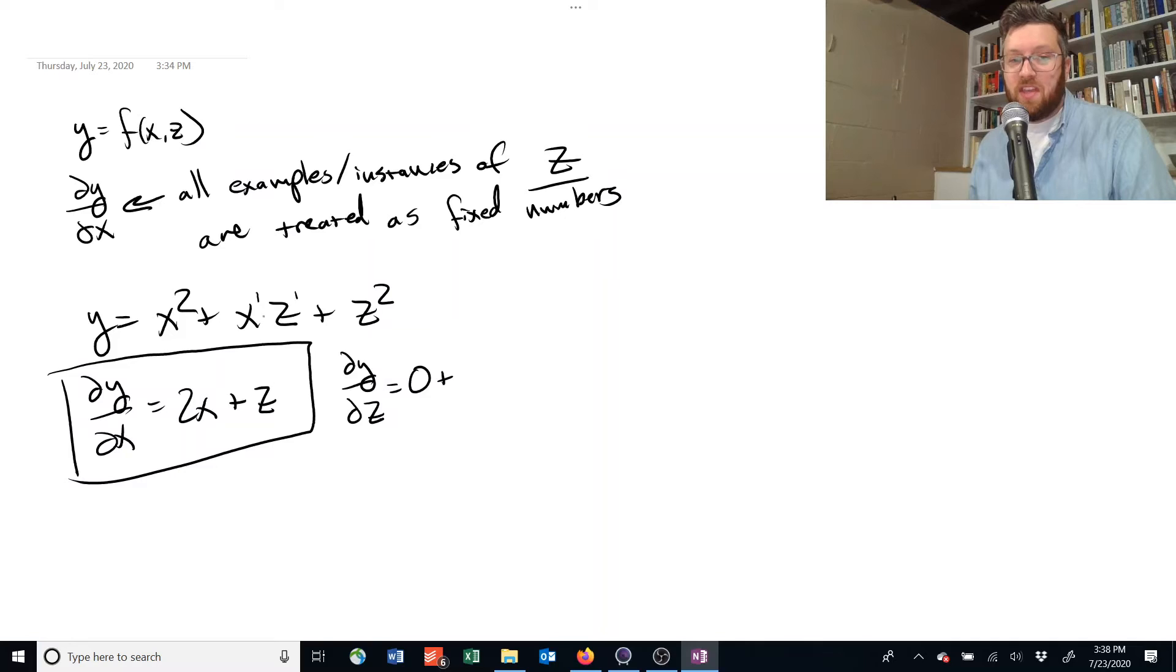The derivative of this guy, we treat the x as a fixed number now, because we're taking the partial derivative with respect to z. So we're going to just write x like we would write a number. And then the derivative of z raised to the power of 1 is just 1.